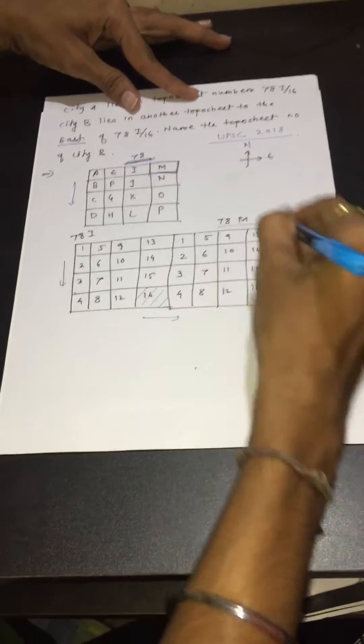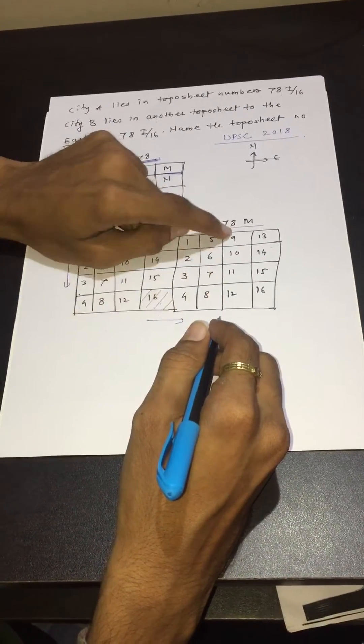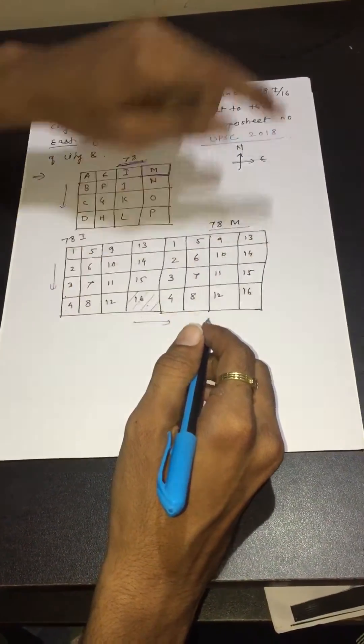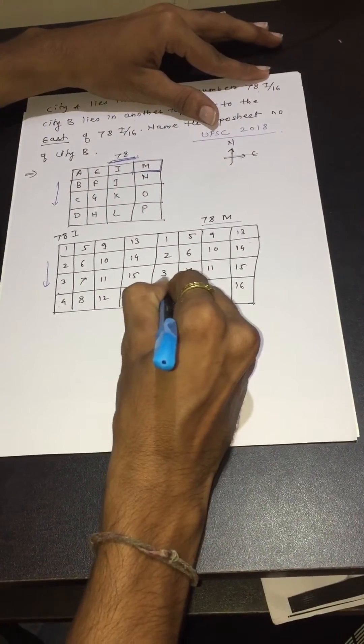Draw here again a square divided into 4 rows and 4 columns. Again label it 1, 2, 3, 4, 5, 6, 7, 8, 9, 10, 11, 12, 13, 14, 15, 16. We can see here towards east there is a number 4.